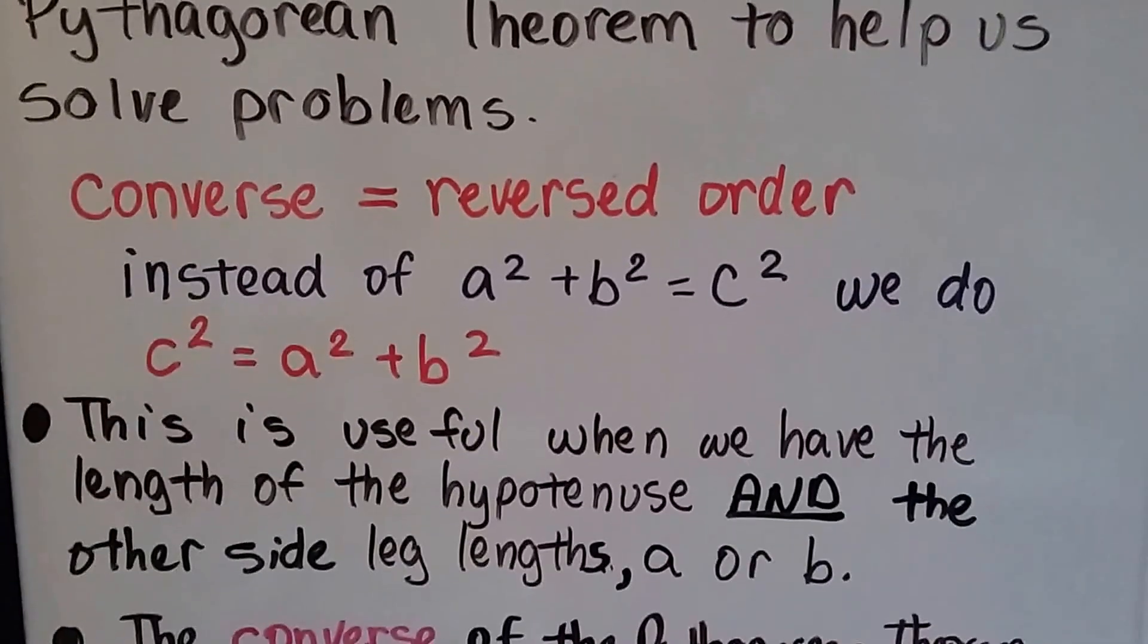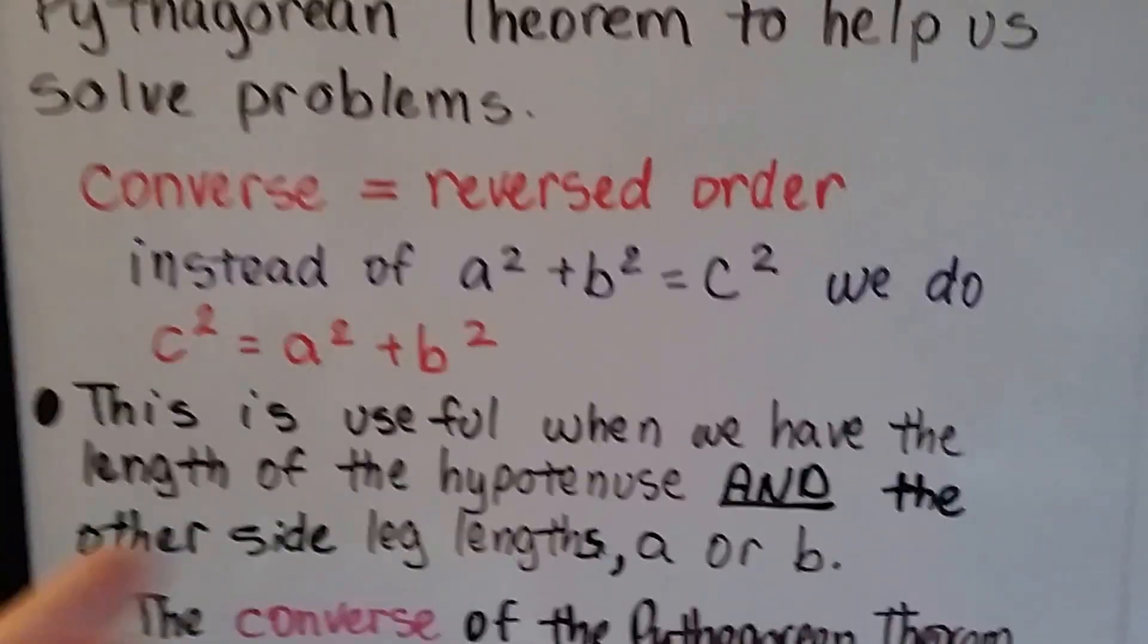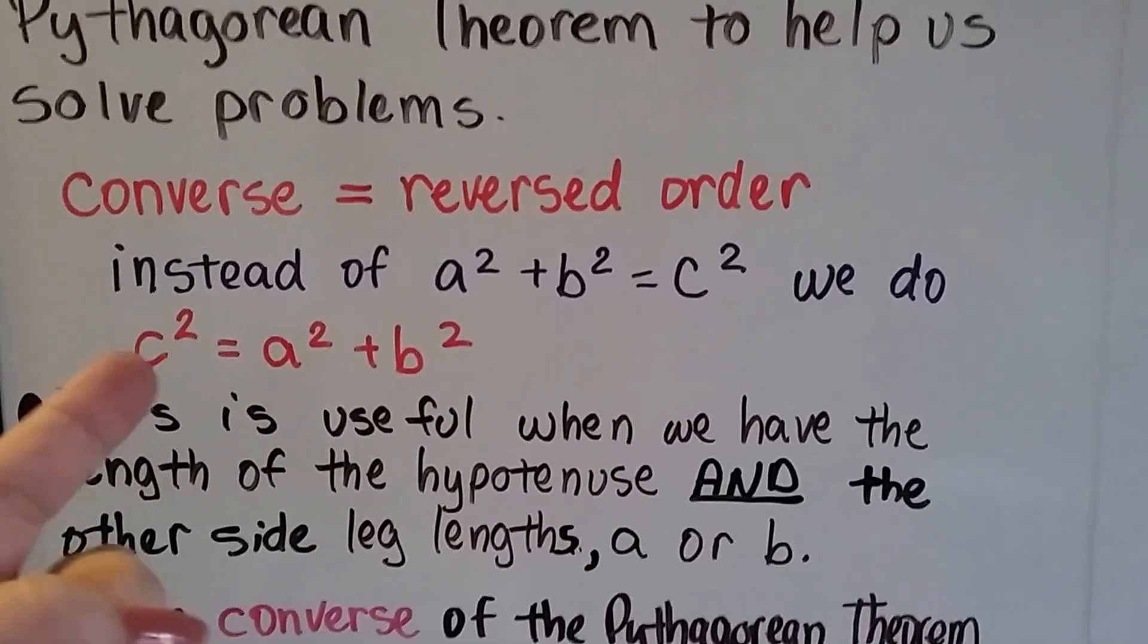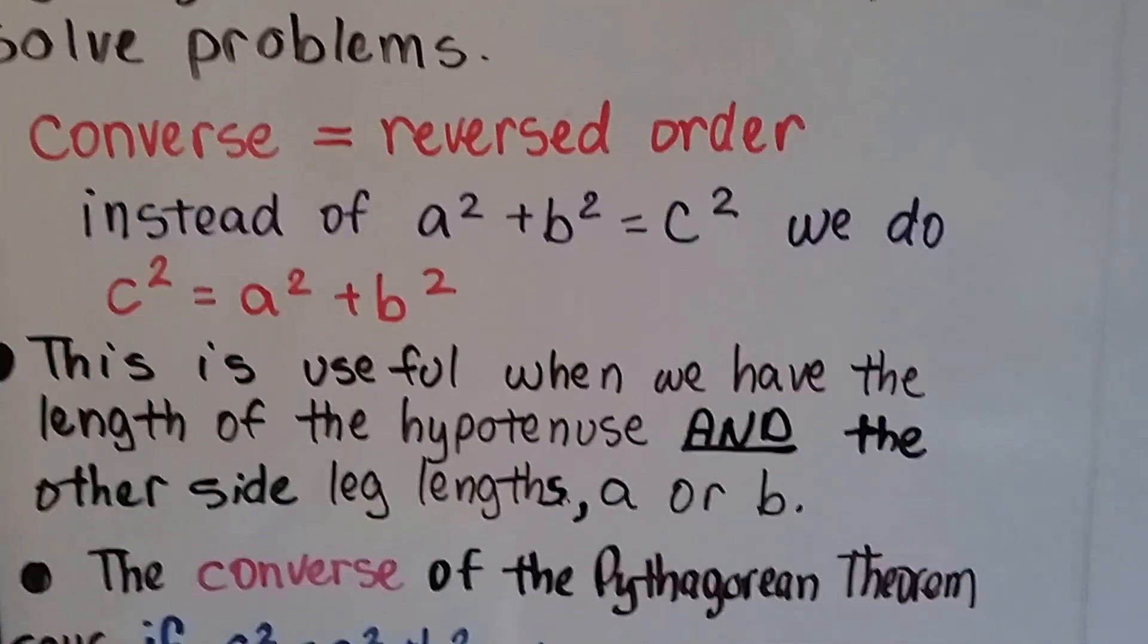Converse means reversed order, so the Pythagorean theorem is a squared plus b squared equals c squared. We do it c squared equals a squared plus b squared for the converse.